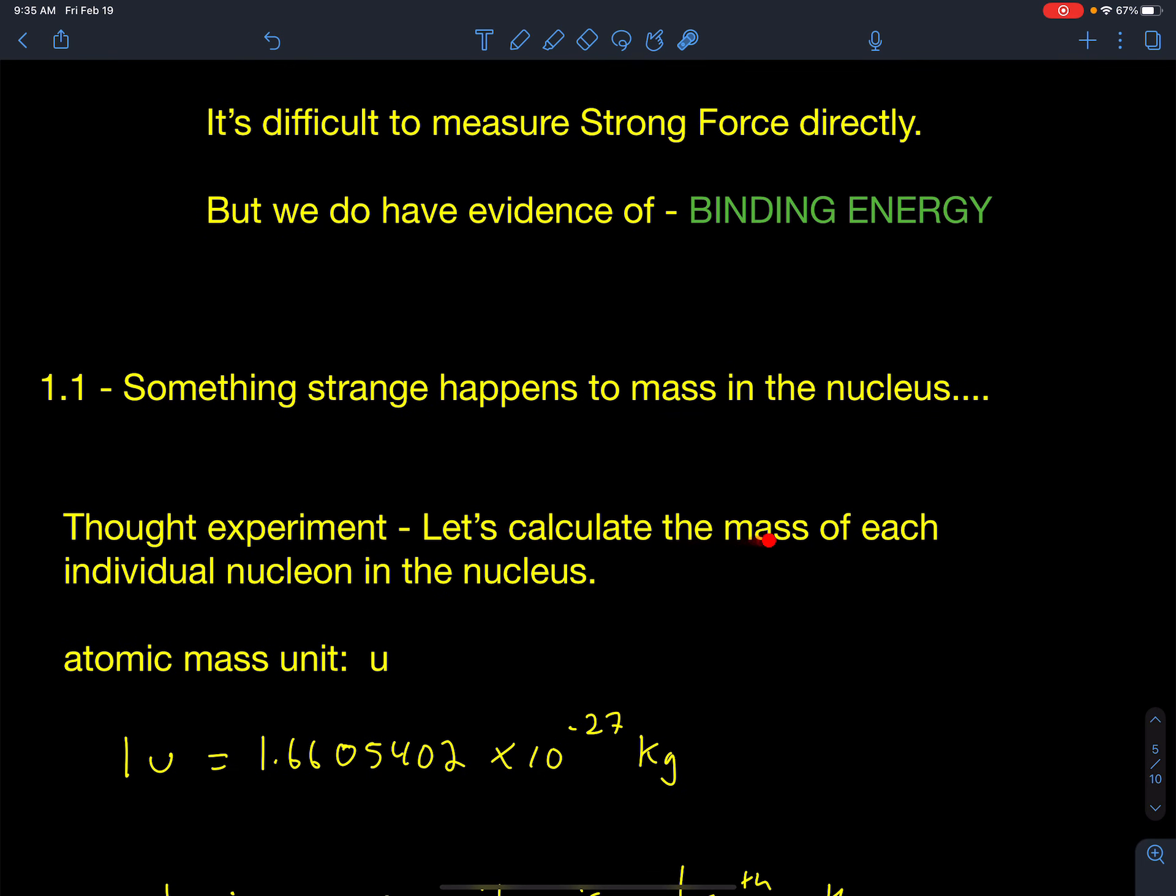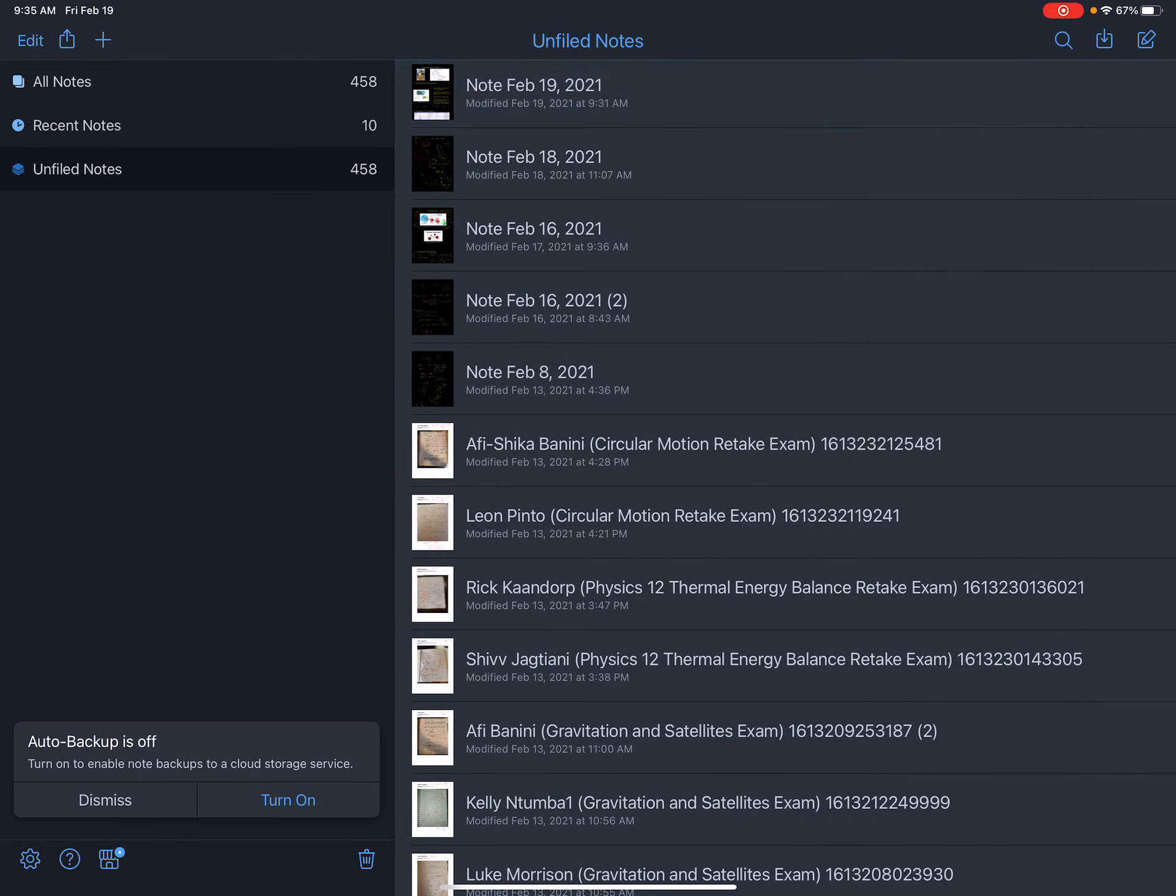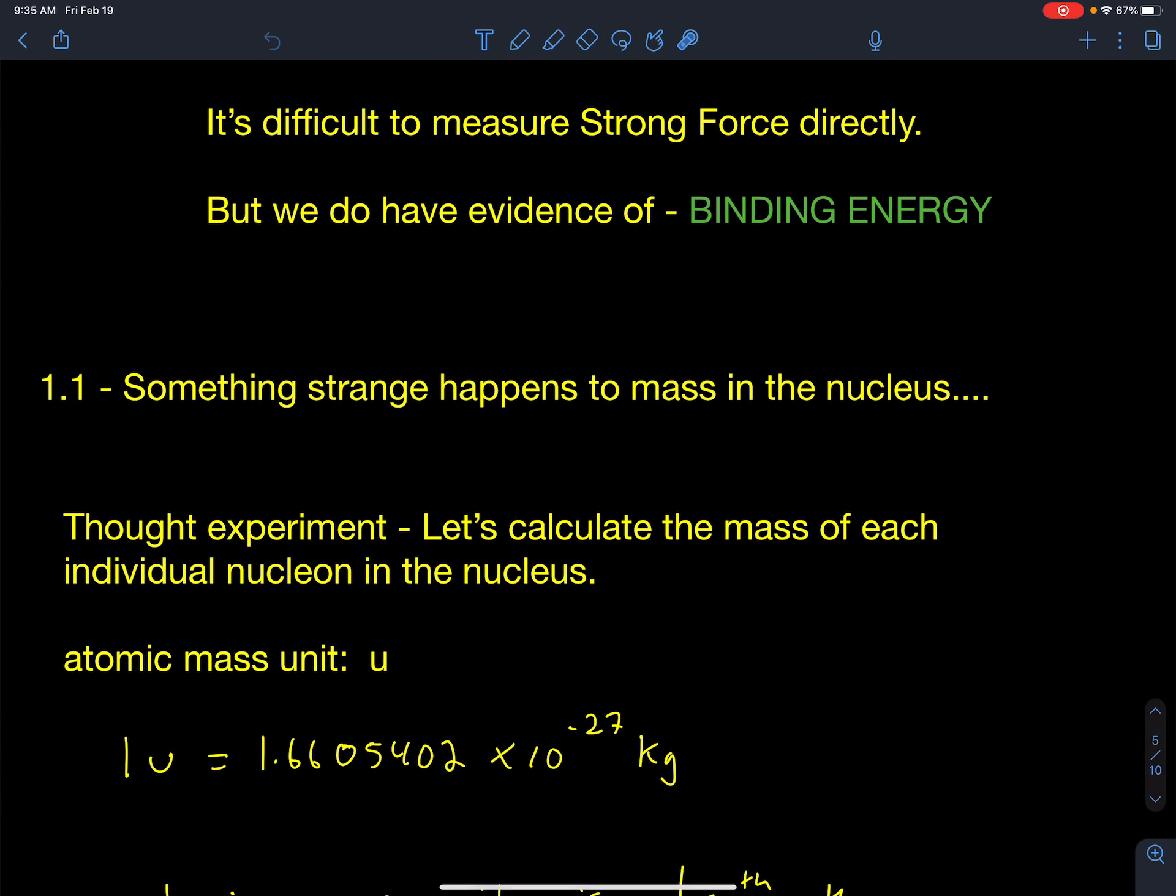The thought experiment: let's calculate the mass of each individual nucleon in a nucleus. And in your textbook and in your data booklet, you'll see a unit called atomic mass unit, U. And it says beside it, one atomic mass unit is 1.6605402 times 10 to the negative 27 kilograms. What that is supposed to represent is that is the mass of a nucleon in a nucleus. So that's the mass of a single nucleon, a proton or a neutron in a nucleus. That was our original idea.